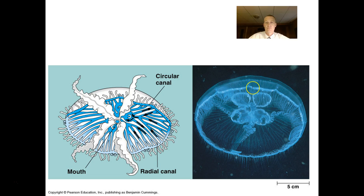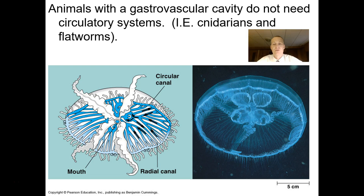Some animals don't actually have circulatory systems. The sponge is a collection of cells, and it's just going to have diffusion of materials — gases and nutrients — right into the cells of its body. It doesn't have to have arteries, veins, and capillaries. It doesn't have a heart to circulate nutrients because it's thin and cellular.